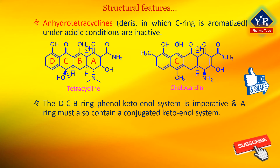The D-C-B ring phenol keto-enol system is imperative, and the A ring must also contain a conjugated keto-enol system. Specifically, the A ring contains a tricarbonyl derivative keto-enol array at positions C1, C2, and C3.